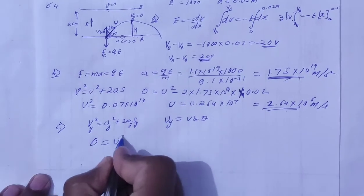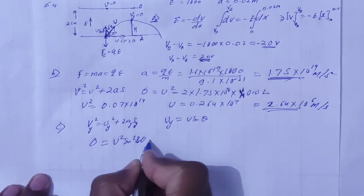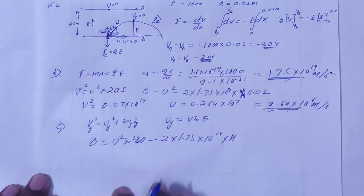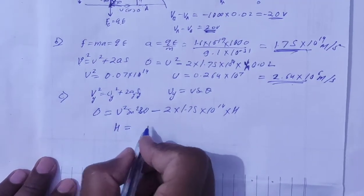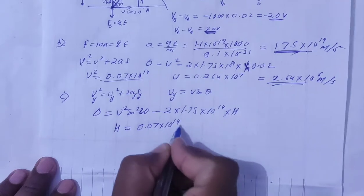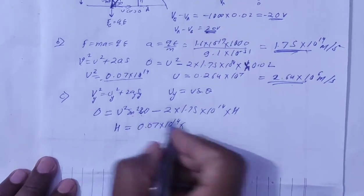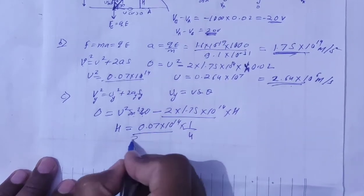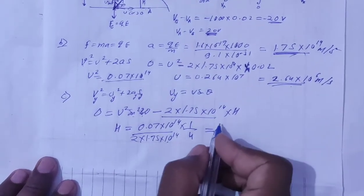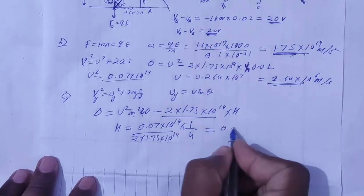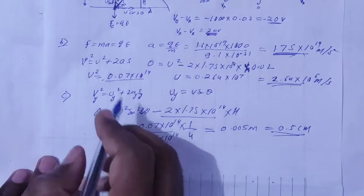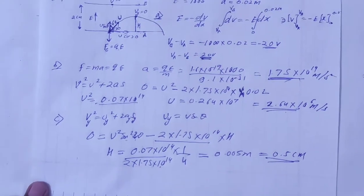Applying v² = u² + 2as in the vertical direction: 0 equals u² sin²(30°) minus 2 times 1.75 into 10 to the power 14 times H. Solving: H equals u² sin²(30°) divided by 2 times 1.75 into 10¹⁴. With u² = 0.07 into 10¹⁴ and sin²(30°) = 1/4, the 10¹⁴ terms cancel out, giving capital H equals 0.005 meters, that is 0.5 centimeters. The maximum vertical height is 0.5 centimeters.